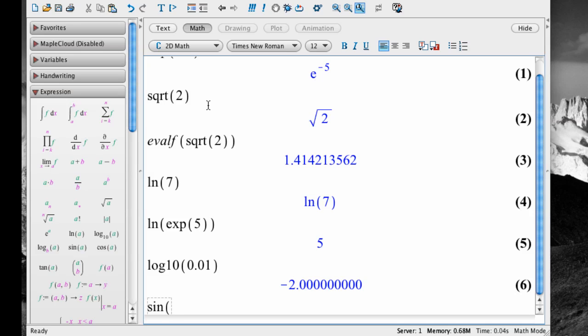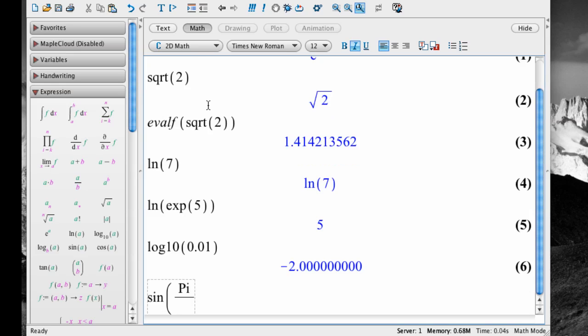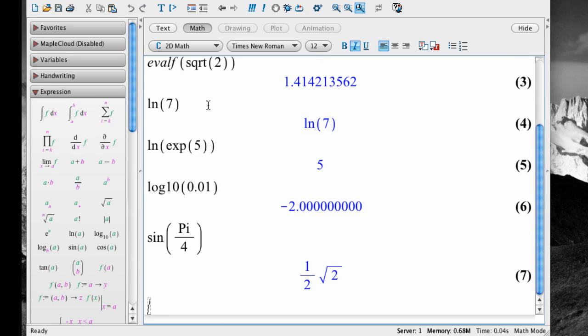Type sin, open parenthesis, capital P, lowercase i, slash to create the fraction, 4, then navigate out of the denominator using the right arrow key, and then close parenthesis and hit enter. Notice that Maple gives you the exact value of the sign.